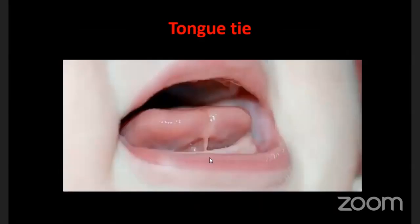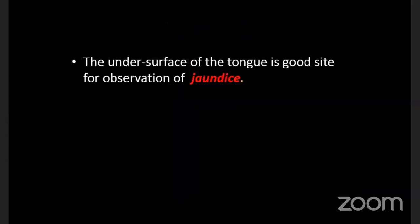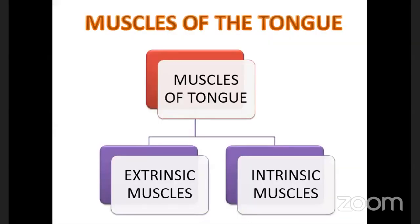This is another clinical picture showing tongue tie - you can see the frenulum extending up to the tip of the tongue. One more very important clinical aspect of the ventral surface is that the under surface of the tongue is a good site for observation of jaundice. We observe jaundice clinically at certain areas - one is the conjunctiva of the eye, and another is the ventral surface of the tongue.